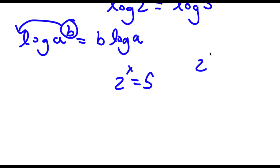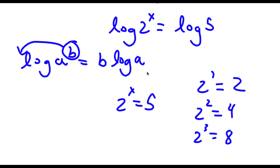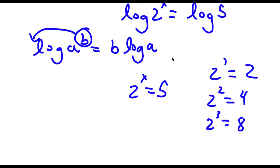2 to the power of 1 is equal to 2, 2 to the power of 2 is equal to 4, and 2 to the power of 3 is equal to 8. So 5 is somewhere between 4 and 8, meaning the value of x is going to be somewhere between 2 and 3 — it's going to be a decimal. So now, by using this property, I can move x to the front, and then I can find the exact value of x.